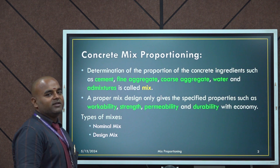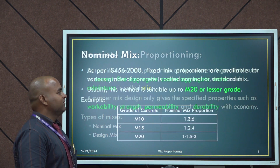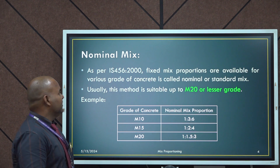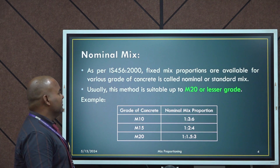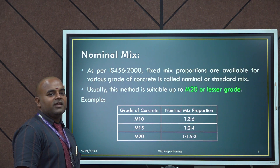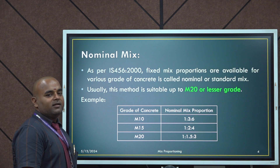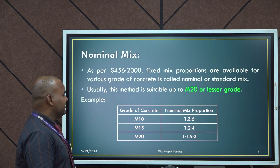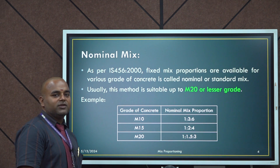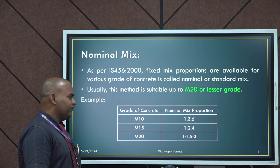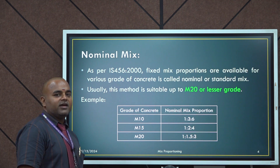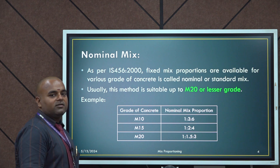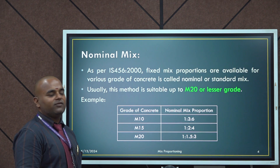We are going to discuss about the types of mixes. There are two types of mixes: one is nominal mix, the next one is design mix. As per IS 456-2000, fixed mix proportions available for various grades of concrete are called nominal or standard mix. For concrete of M20 or lesser grade, the ratio is given in IS 456-2000. For example, for M10 it is 1:3:6, for M15 it is 1:2:4, and for M20 it is 1:1.5:3. The first value stands for cement content, the second for fine aggregate content, and the third for coarse aggregate content.